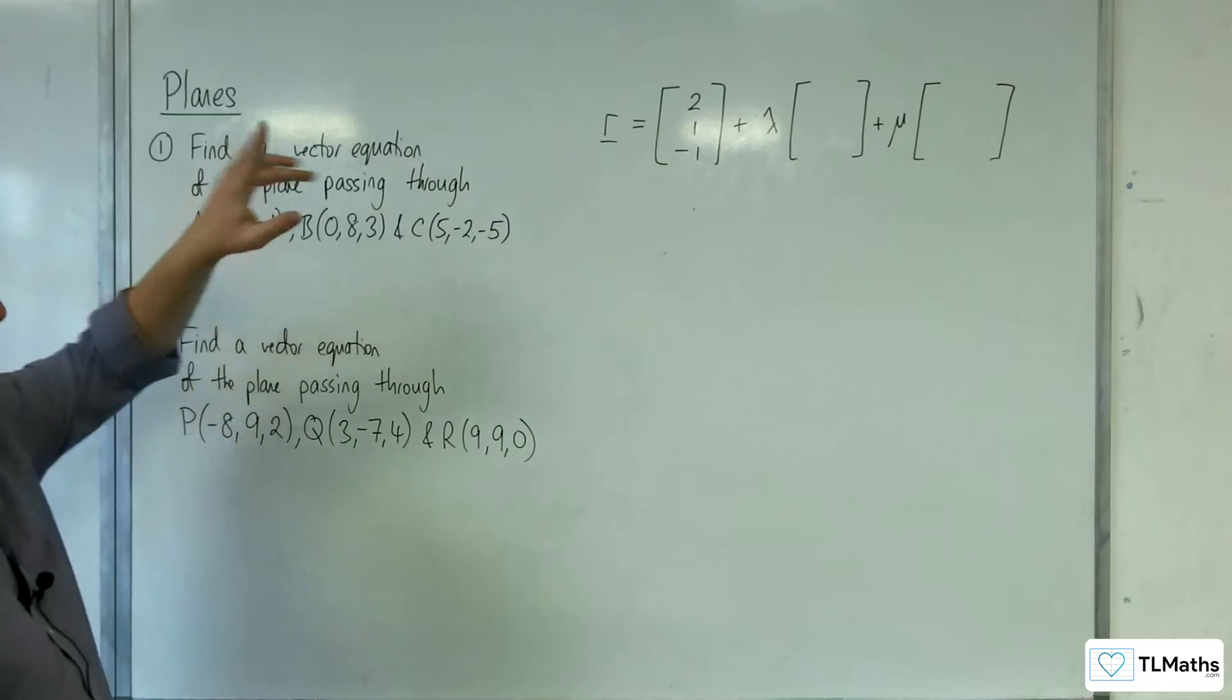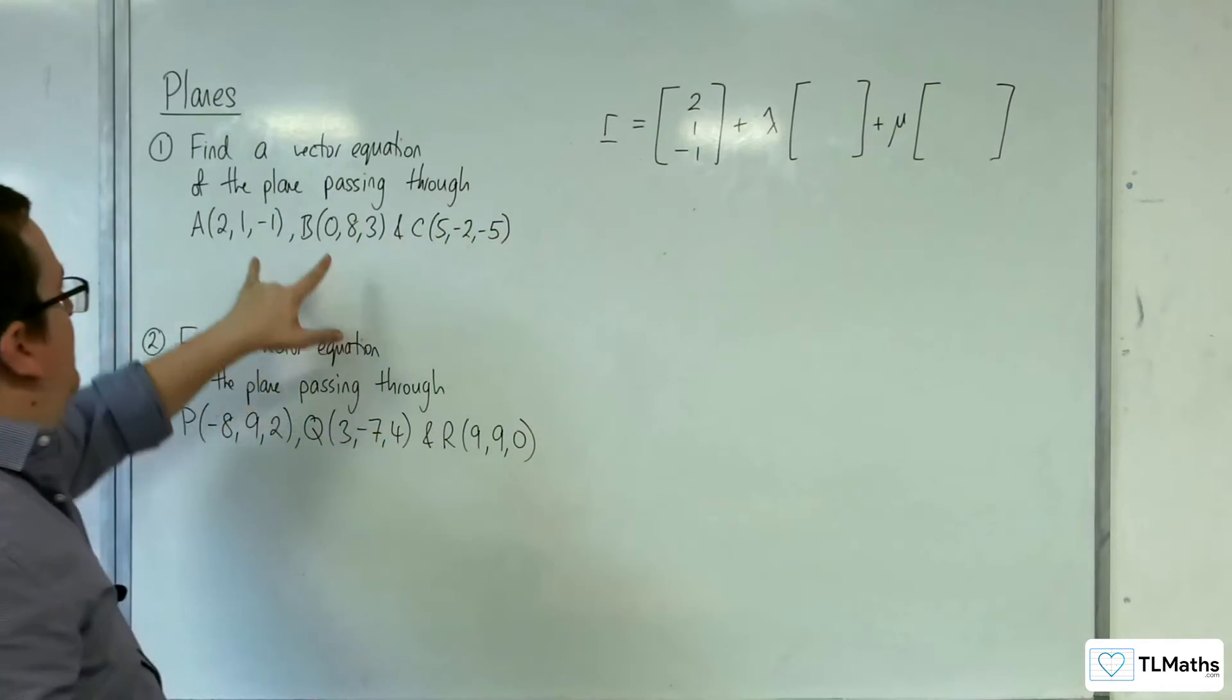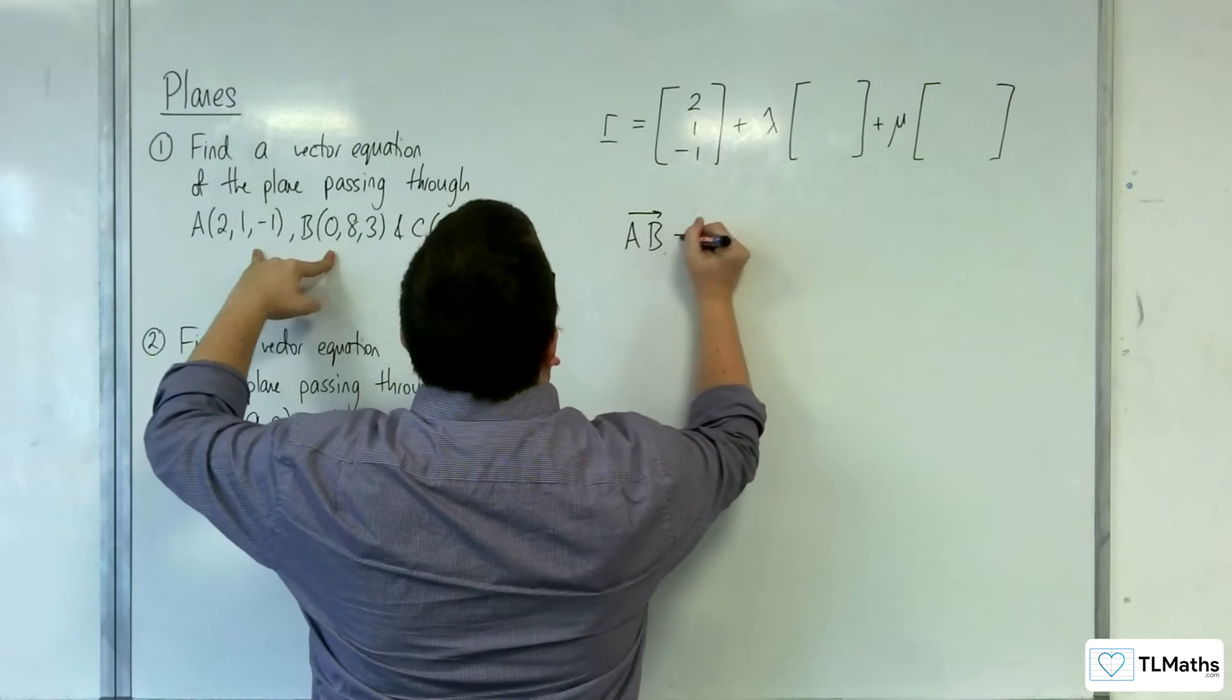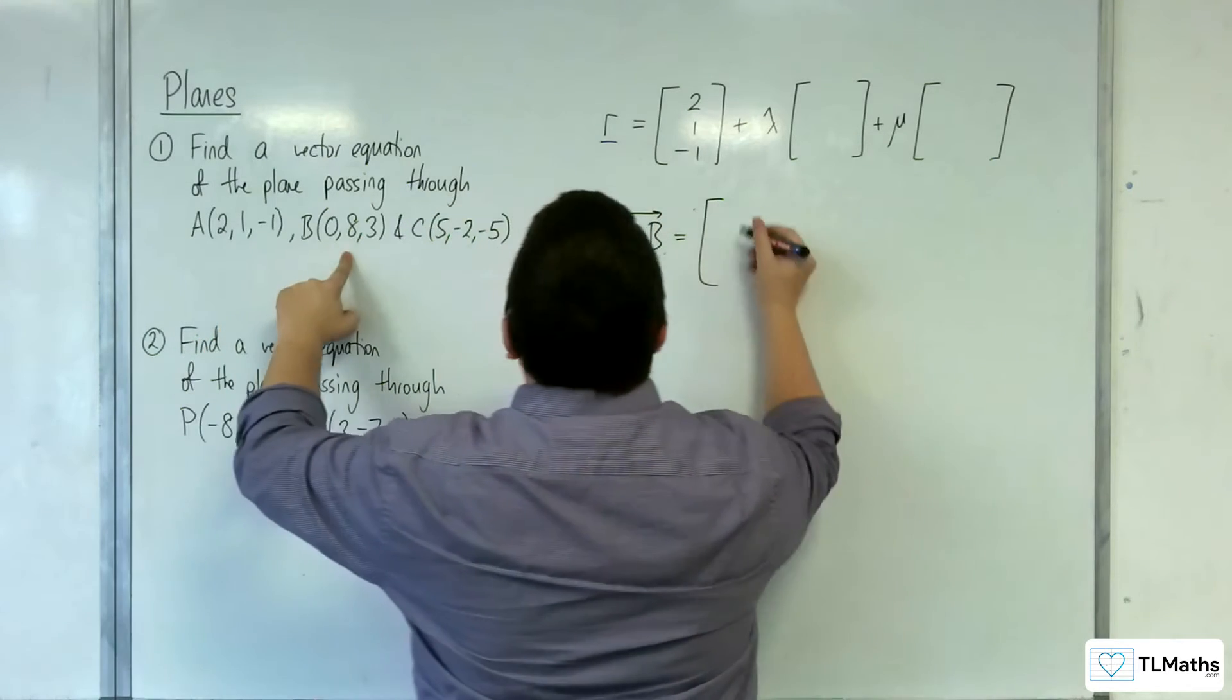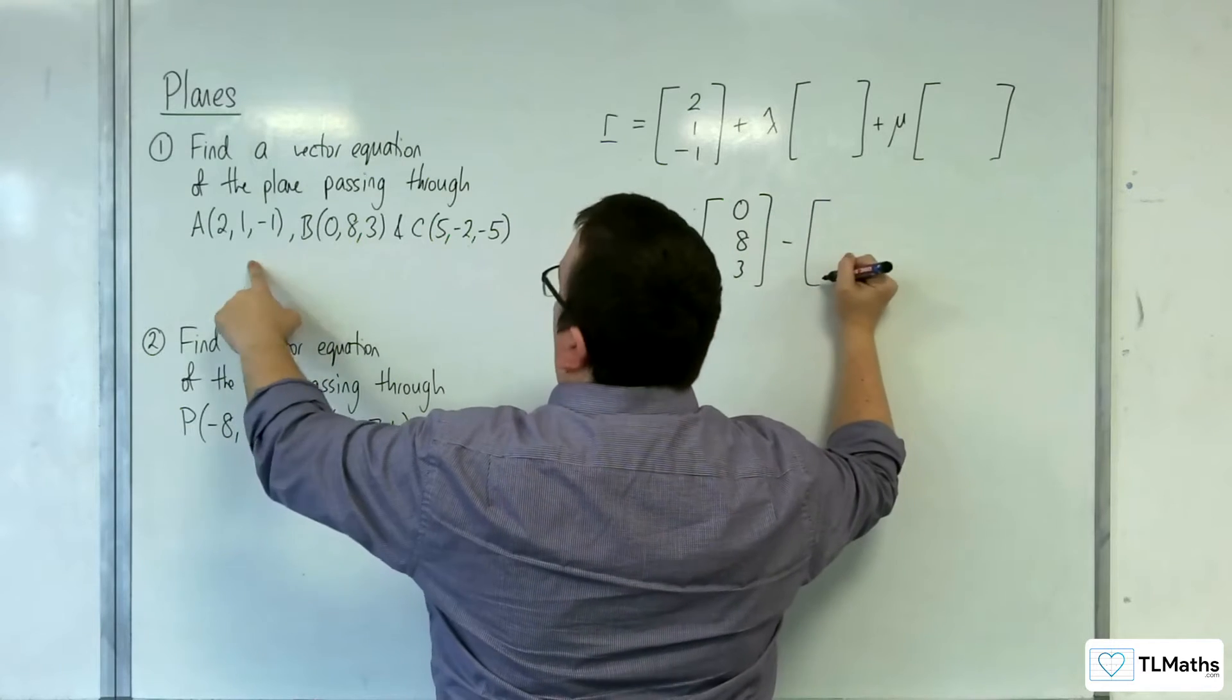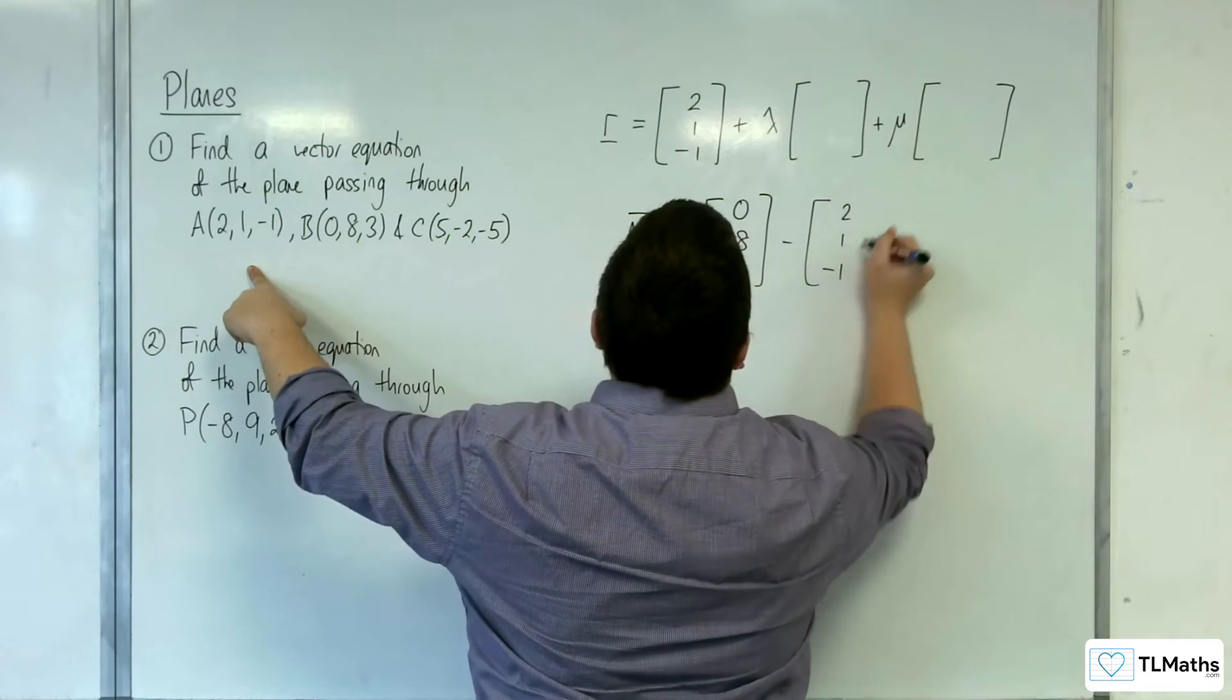Okay, so let's, first of all, first direction vector, AB. So AB is going to be equal to OB, 0, 8, 3, take away OA, 2, 1, minus 1.